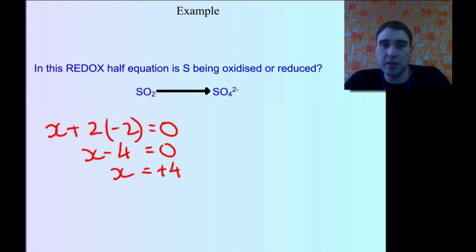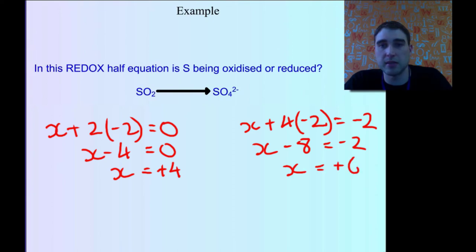Over this side, we've got x plus 4 times minus 2 equals minus 2 because we've got a charge here. So x minus 8 equals minus 2. Add 8 to both sides and we get x equals plus 6. So we've got plus 4 here and plus 6 here.